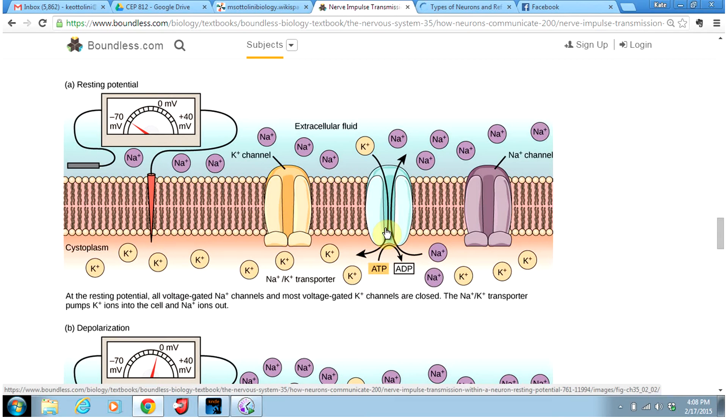It is going to help maintain this negative 70 millivolts by transporting Na plus out and K plus in. For every three Na plus it transports out, it only transports two K plus in. We end up with more positive charge leaving the cell than entering the cell. Hence, the inside of the cell is going to be more negative.